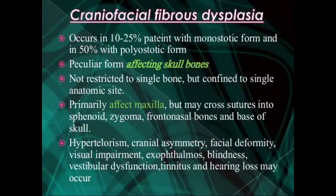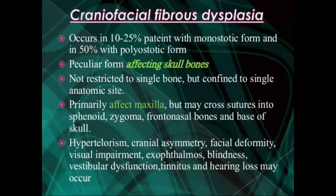The craniofacial form occurs in 10 to 25 percent of patients in the monostotic form and 50 percent in the polyostatic form. It occurs around the skull bones, especially affecting the maxilla, and may cross sutures involving the sphenoid, zygoma, frontal, ethmoid bones, and the base of the skull. Clinical features include hypertelorism, cranial asymmetry, facial deformity, visual impairment, exophthalmos, blindness, vestibular dysfunction, tinnitus, and hearing loss.